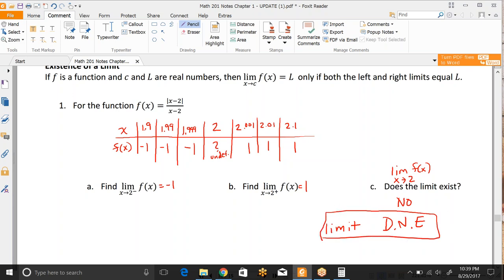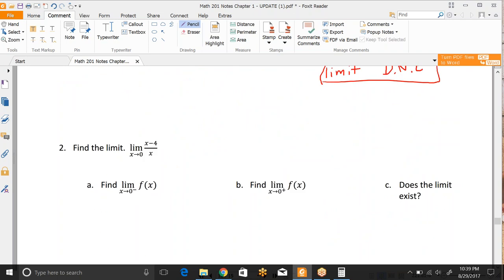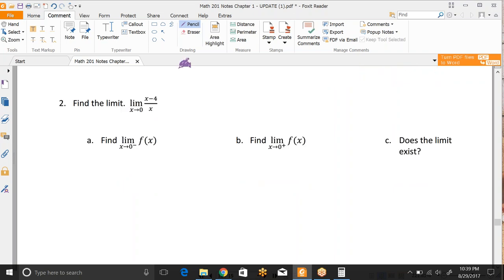Alright, let's look at another example really quick. So our next one we have to find the limit as x approaches 0 of x minus 4 over x. So we're going to be doing it again from the left side and the right side. And then we'll try to determine if the limit exists overall. Which only happens if those two limits match.